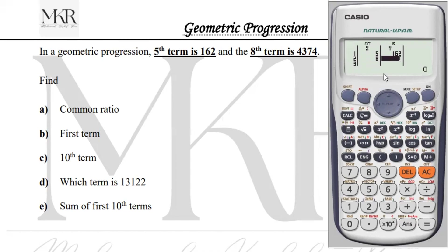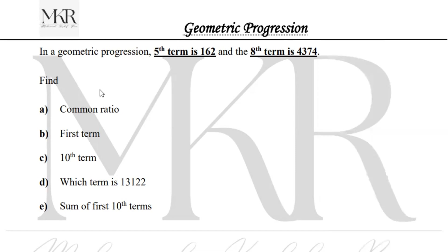The eighth term is 4374. Now to find the common ratio, press shift, one, then five key. Press two key for geometric progression. The common ratio is 3. Here we have answer 3.